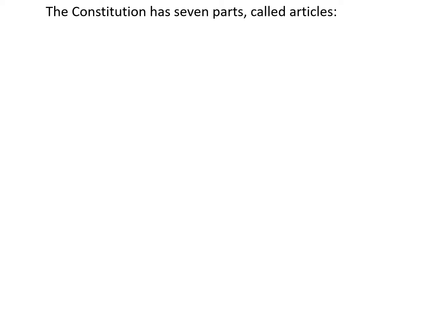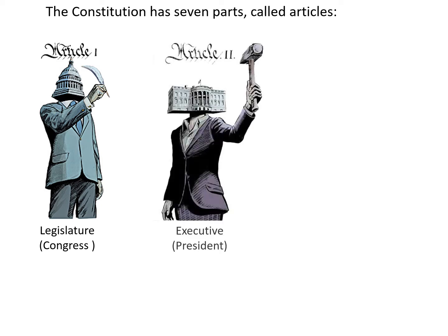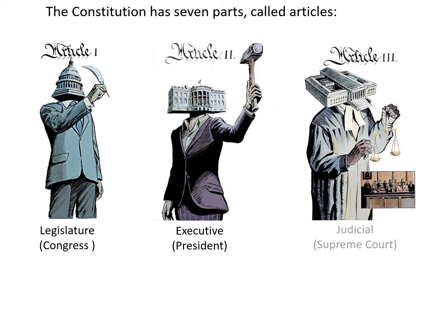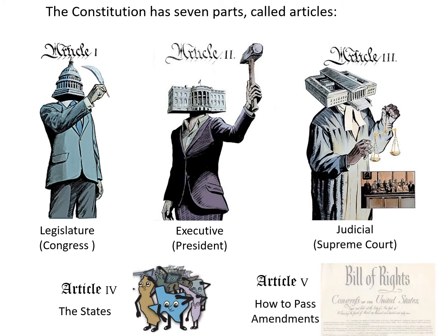The Constitution has seven parts called Articles. Article 1 is the Legislature. Article 2 is the Executive. And Article 3 is the Judicial. These are the main three parts.